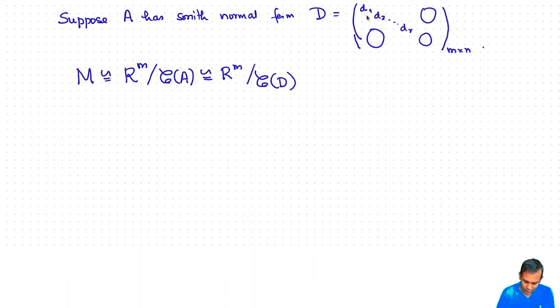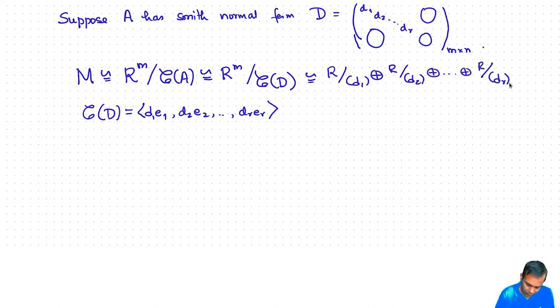Well, what we are saying here is the column space of D means this is the submodule generated by d₁e₁, d₂e₂, ..., dᵣeᵣ. So these vectors get killed in R^m to give you something isomorphic to M. So this is just the same as R mod d₁ direct sum R mod d₂ direct sum ... R mod dᵣ. And beyond that it is R mod 0. So it is direct sum R to the power of n minus r.